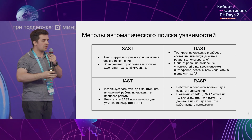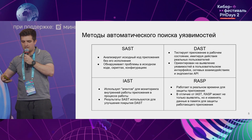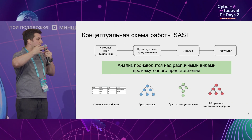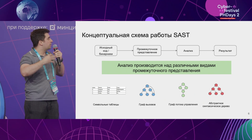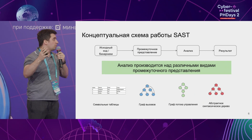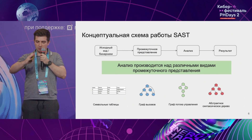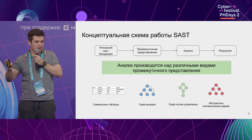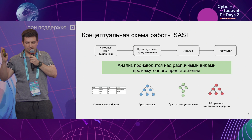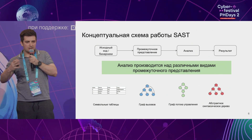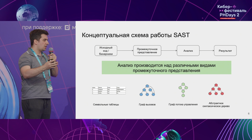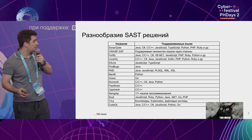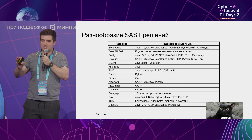SAST's key feature is that it analyzes source code without running it, without execution, and is used during application development. The concept: input is source code or binary, then converted into some intermediate representation — it can be a character, symbol, various graphs, a syntax tree, or any kind of custom data — which is subject to analysis. The output is a set of warnings ranked by their importance and criticality.